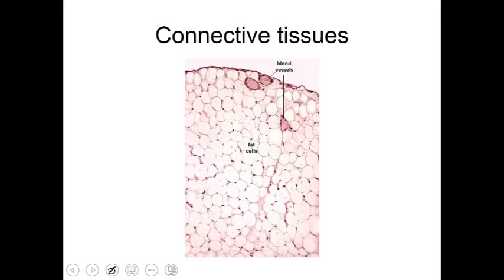During this lecture, we are going to talk about connective tissues. This is a continuation to the epithelial tissues chapter. The four classes of basic tissues in the body are: first, epithelial; second, connective tissue; third, muscle tissue; and fourth, nervous tissue. This section is going to talk about the different types and categories of connective tissues.